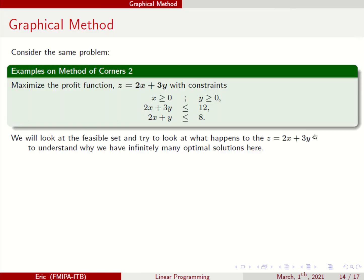Let's look at the last example on the method of corners. You know that this example has infinitely many optimal solutions, because you find two adjacent vertices that have the optimal solution. So you have infinitely many points that give you an optimal solution along the line segment connecting those two points. We want to understand why this is happening.